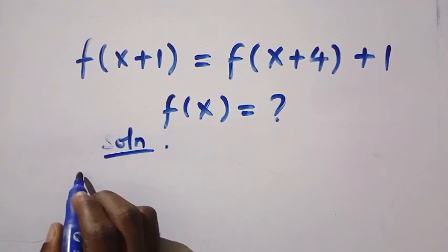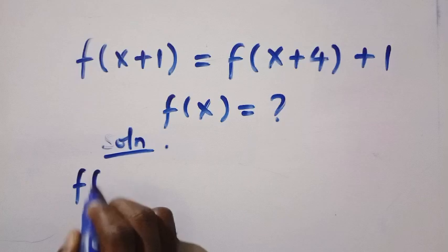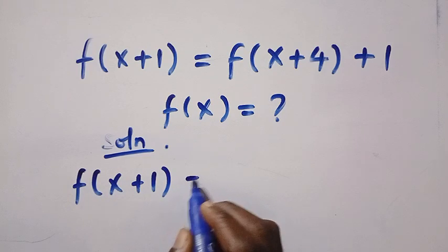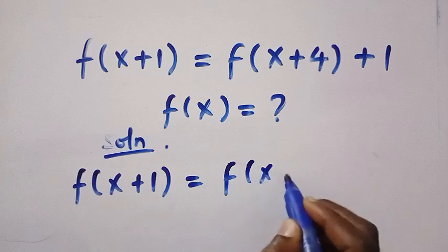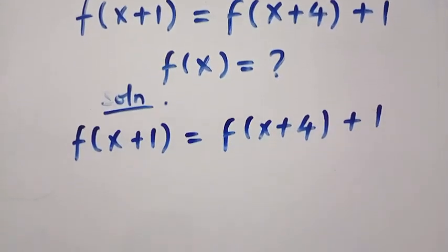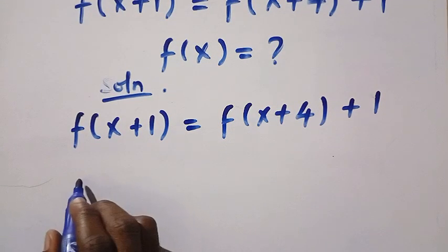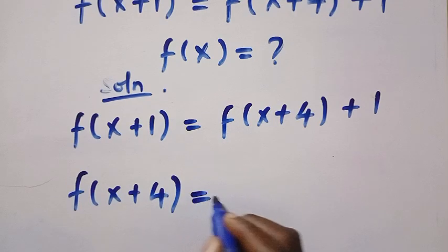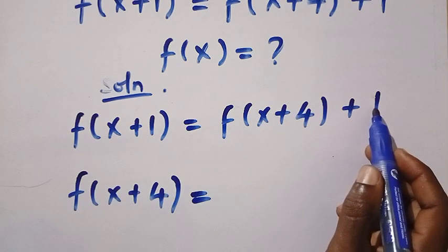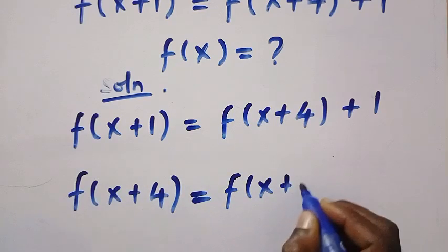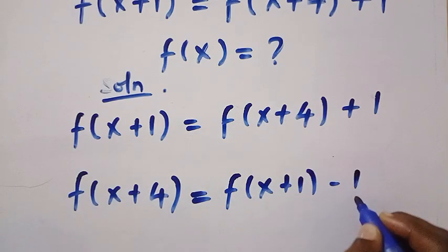On the left-hand side we have f of x plus 1, which equals f of x plus 4 plus 1. If I write this in the form of f of x plus 4, I'm going to take this 1 to the other side, and we have f of x plus 4 equals f of x plus 1 minus 1.